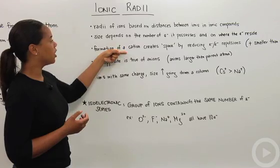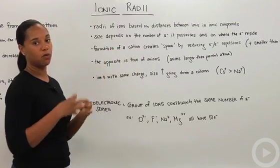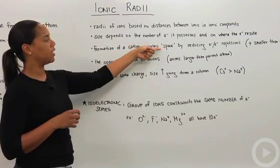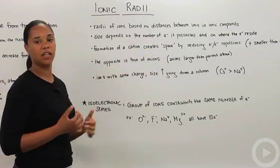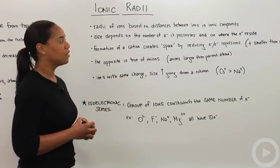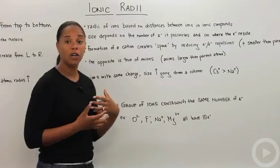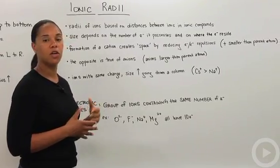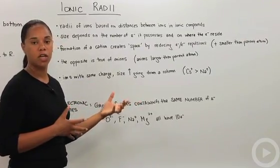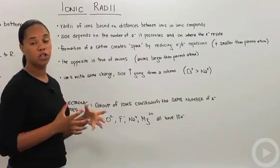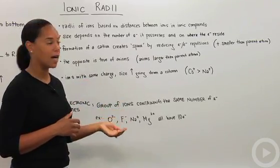So you can have formation of a cation, the removal of an electron, and that will create space because it reduces electron-electron repulsions within the ion. So cations tend to be smaller than their parent atoms, so sodium with no charge is going to be larger than sodium plus ion.